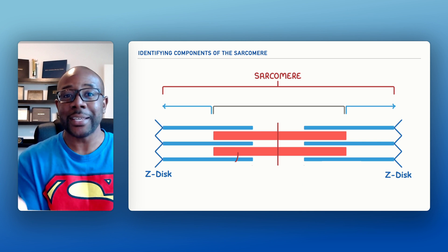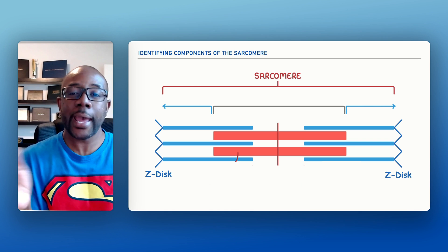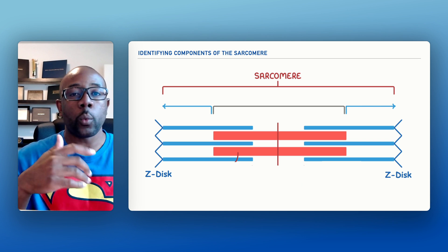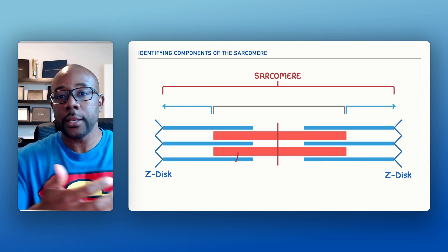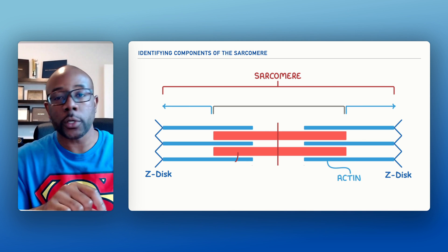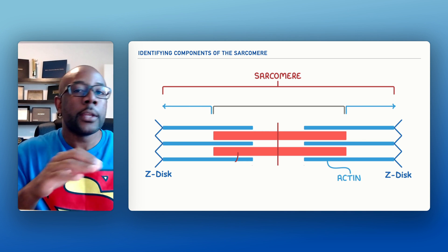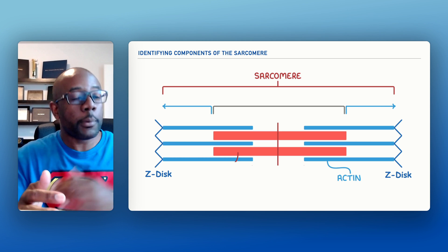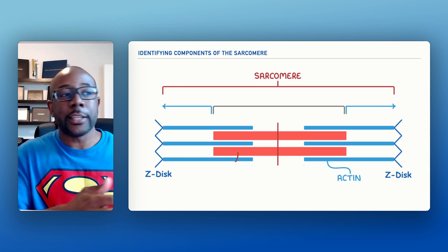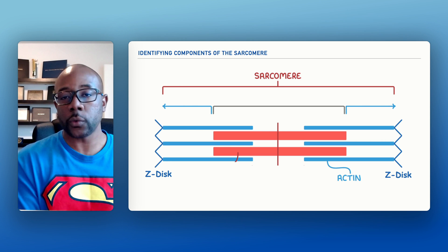So because the Z-disc is an anchor for our actin, let's go ahead and label where we'll find our actin filament on this image, and that'll be the light blue structure that you see here. Now we've labeled it on the right-hand side of the screen, but we could just as easily label it on the left side of the screen as well.